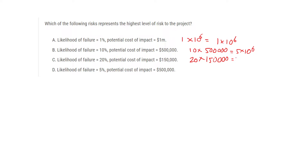The third gives 2.5 × 10^6 and the last one is 5 × 5 × 10^5 = 2.5 × 10^6. The highest value is 5 × 10^6, so the answer is B.